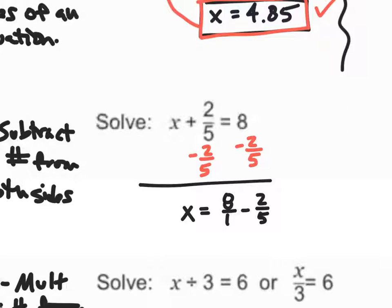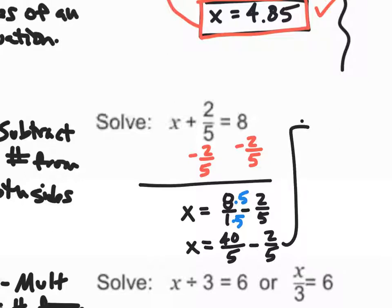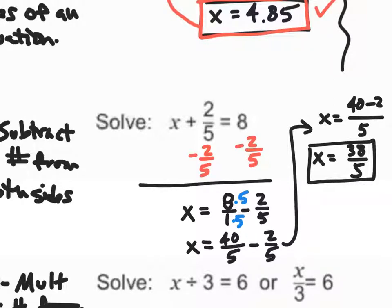In order to subtract fractions, we need a common denominator. I have a 1 and a 5, and I want to turn the 1 into a 5 by multiplying top and bottom by 5. So I get x equals 40 over 5 minus 2 over 5. I add the numerators and keep the denominator: 40 minus 2 is 38, so x equals 38 fifths. That's my answer algebraically.